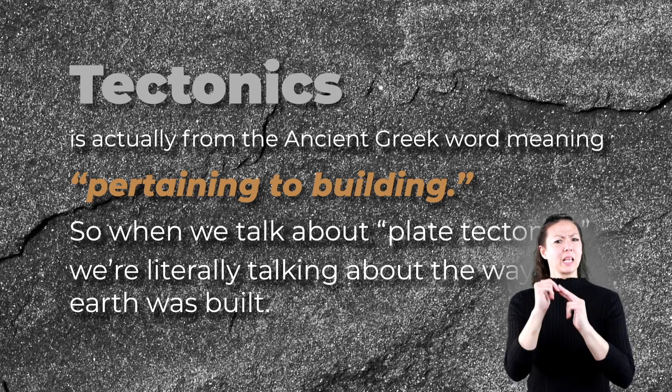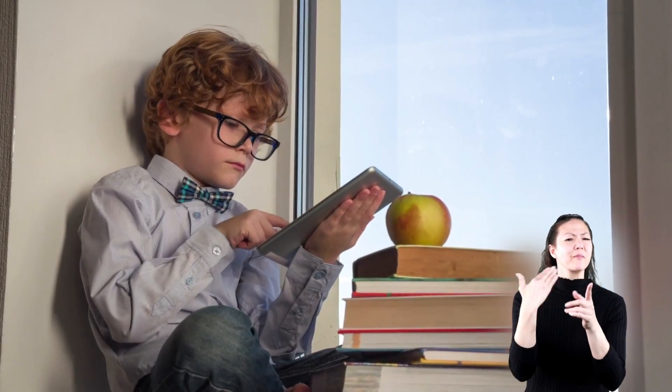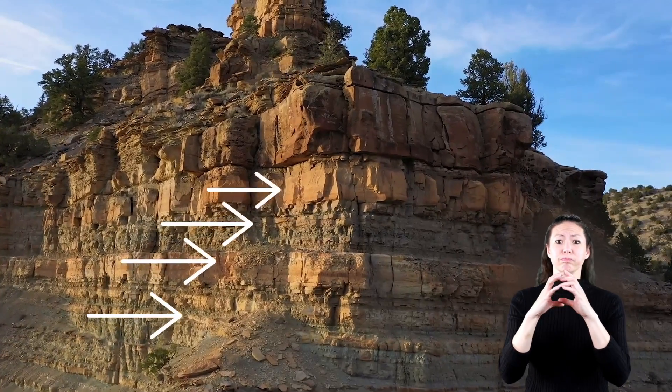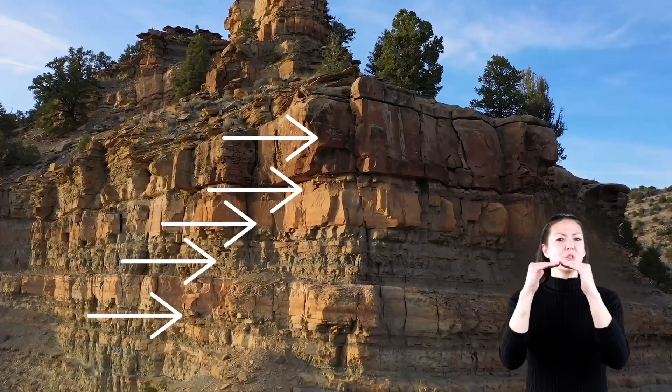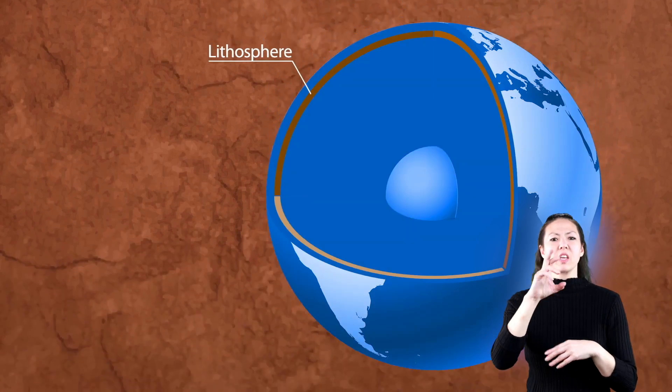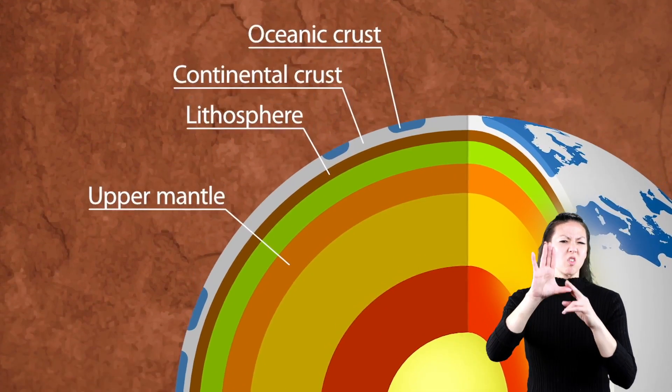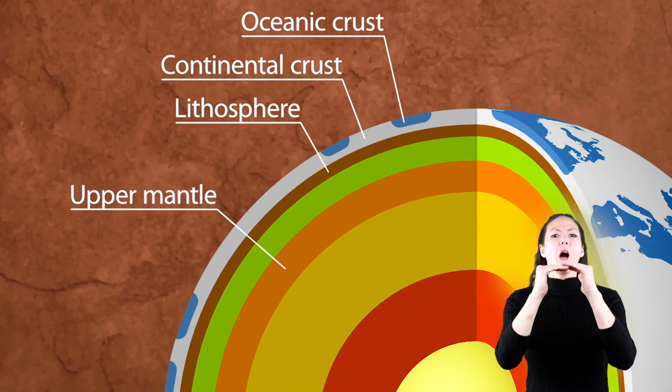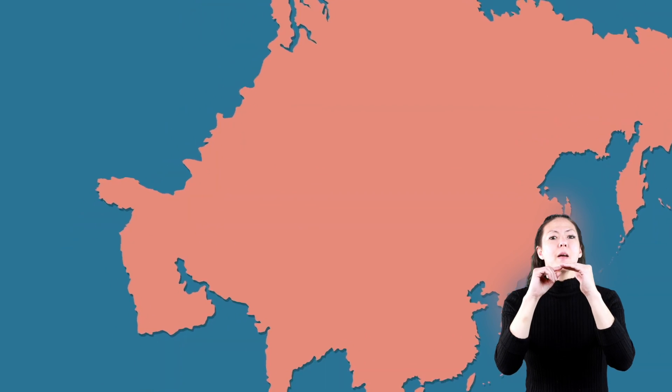As you might have already learned, the earth is made up of several layers that go all the way down to its core. The top layer of the earth that actually moves is called the lithosphere. That layer consists of the earth's crust and part of the upper mantle, and it moves in big pieces of land called tectonic plates.